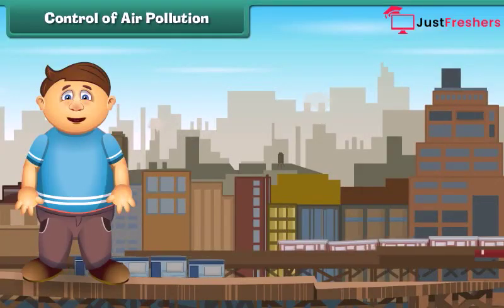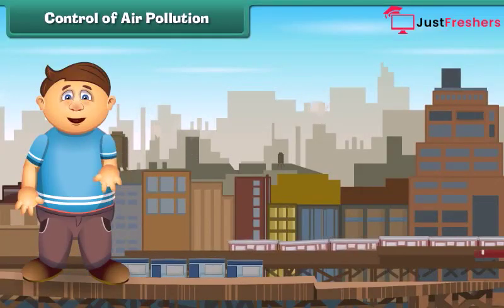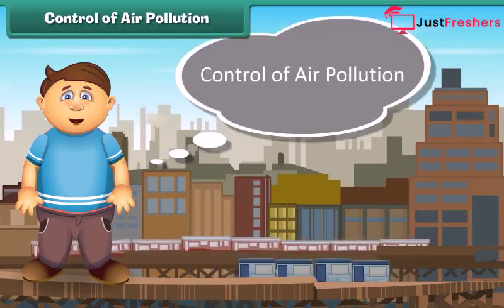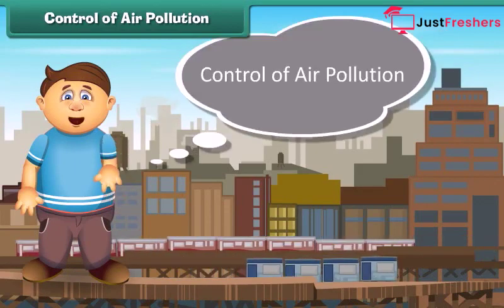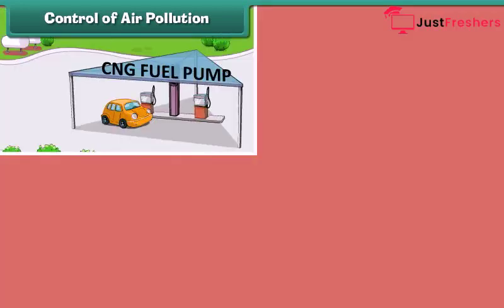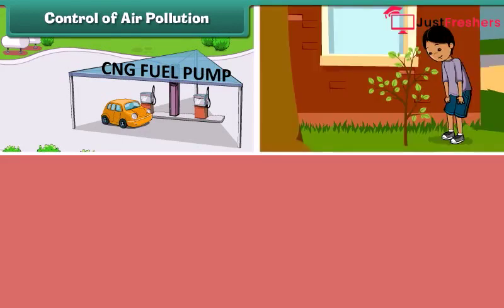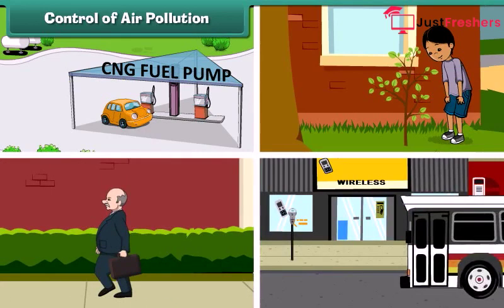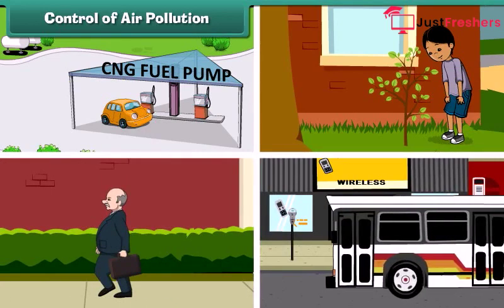Now the question is how we can control air pollution. Air pollution can be controlled by using clean fuels such as CNG in vehicles and industries, planting new young plants, preferring walking over driving, and using public transport for transportation.